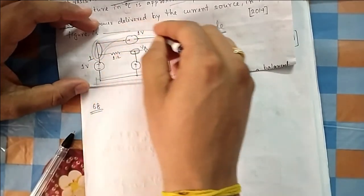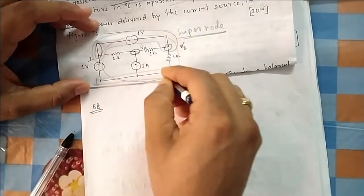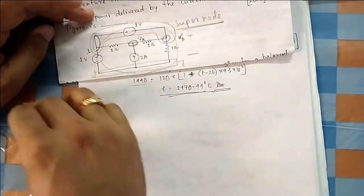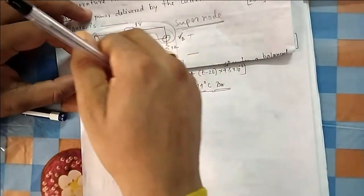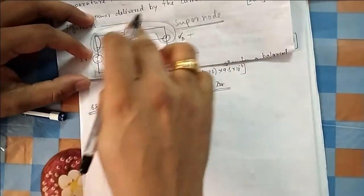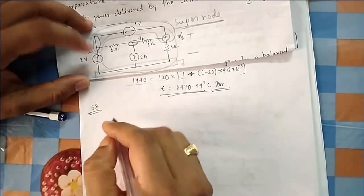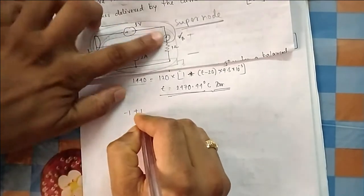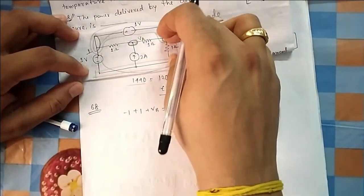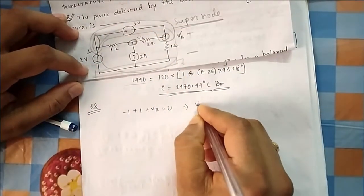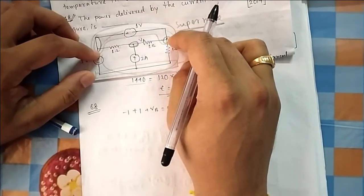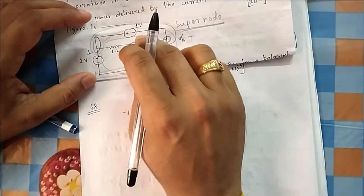Let this voltage be VA and this one VB. To find the relation between them, take KVL along the path through the voltage source. Moving along the path: −1 + 1 + VB = 0, so VB = 0. Now you know this voltage is zero, and you know VA. Apply simple nodal analysis at the supernode.